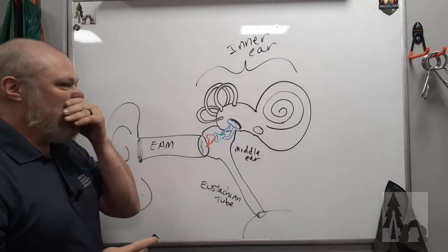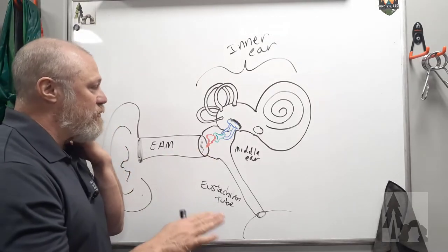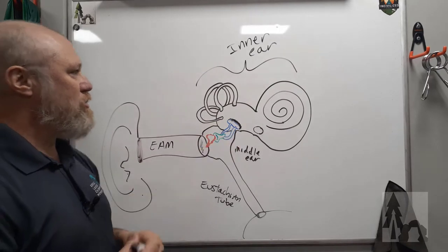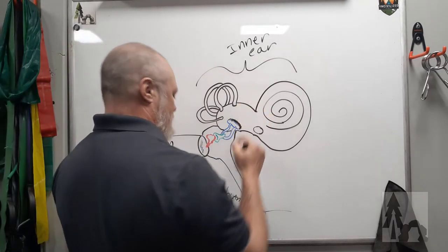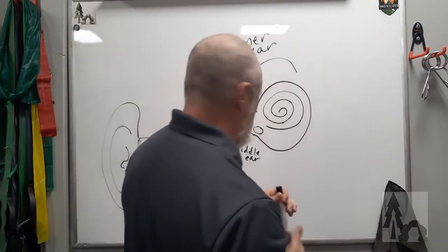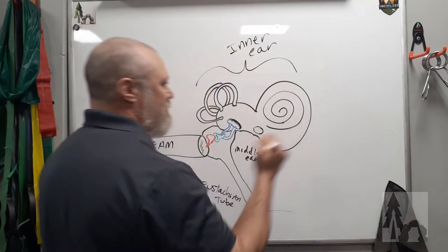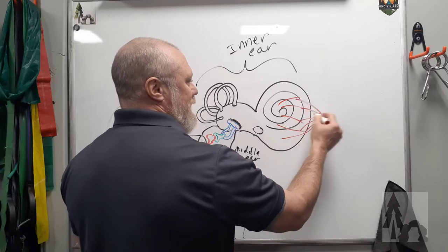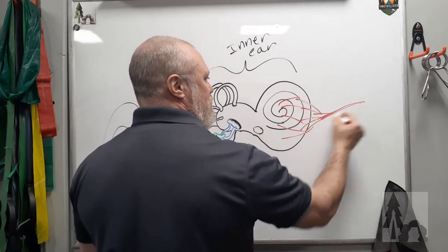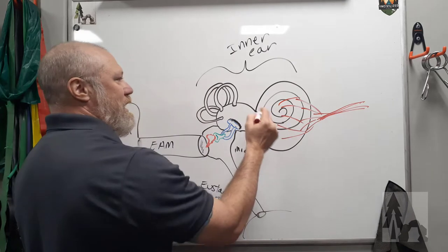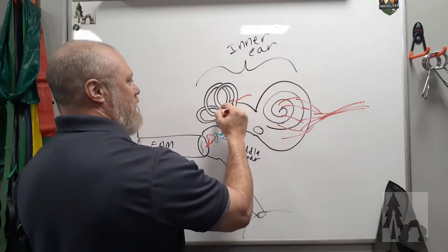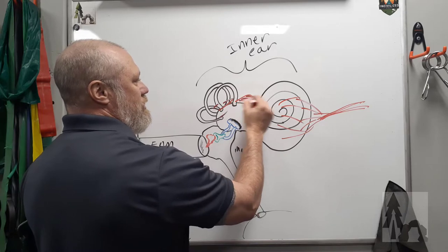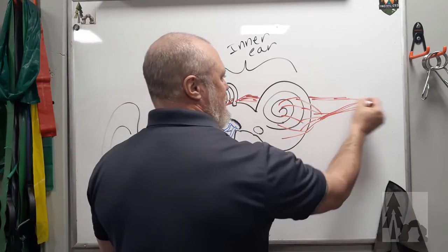The way this works, it looks awful complex, but I'll try to keep this pretty simple and straightforward. The inner ear is the structure that is going to relay information in. There's a lot of little neural endings that converge and run into the brain, and there's little neural connections from over here that will converge and run into the brain.